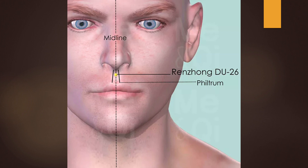DU 26, or Governing Vessel 26, is used for pain on the midline or starting from the midline and spreading out. Location: on the face at the junction of the superior third and middle third of the philtrum. DU 26 is a crossing point of the du vessel with the large intestine and stomach meridians. It resuscitates, treats acute lumbar sprain, and benefits the nose. DU 26 is used for emergency treatment. Needling: oblique insertion upwards 0.3 to 0.5 cun.